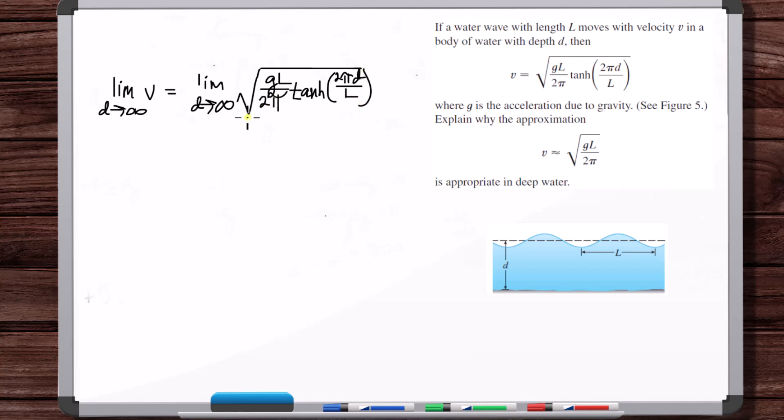So how do we evaluate this limit? Well, the square root of GL over 2π, that's a constant. So we can rewrite this limit as we can bring the constant out in front of the limit.